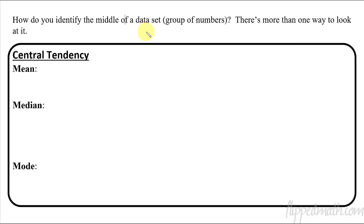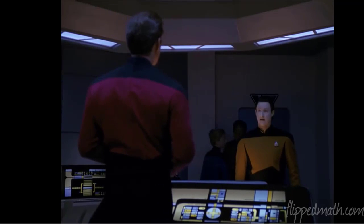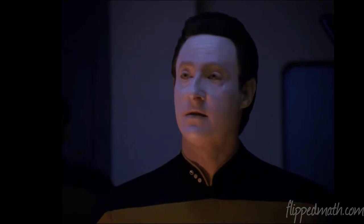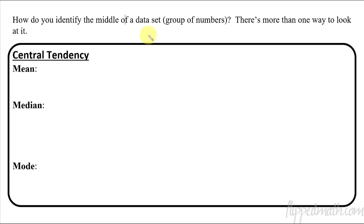A group of numbers is a data set. Now I say data set as opposed to data. Some people say data, I say data. Both are correct, it doesn't really matter. In fact, the reason I say data... I just really like Star Trek growing up and now that's the only way I can say it. Commander Data, so data.